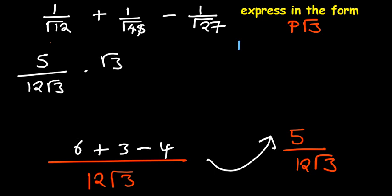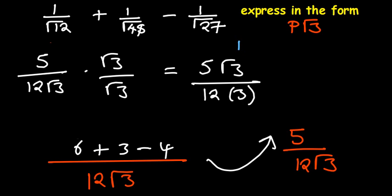So on top, we're going to have 5 root of 3. Denominator are going to have 12 root of 3 times root of 3. That's going to give us 3. And so our result becomes 5 root of 3 over 56.